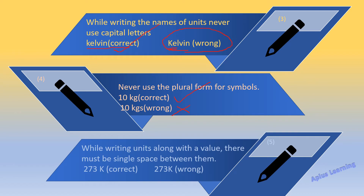The next rule: while writing units along with the value, there must be a single space between them. Observe the two examples — '273 K' has a single space between the number and the symbol; that is the correct form. In the second form, no space is left between the number and the symbol, which is incorrect. There must always be a single space between the value and the unit.